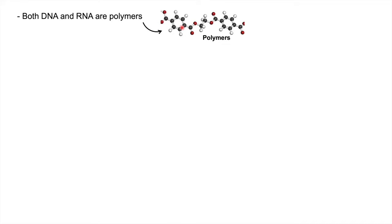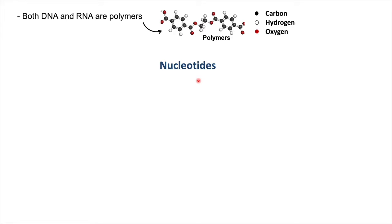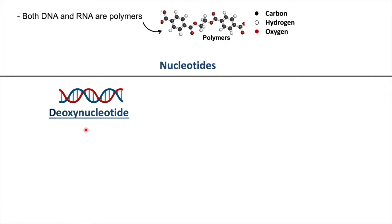Both DNA and RNA are polymers, and polymers are basically just long repeating units of monomers. In this structure, these monomers are carbon, hydrogen, and oxygen atoms. When it comes to both DNA and RNA, these monomers are called nucleotides.